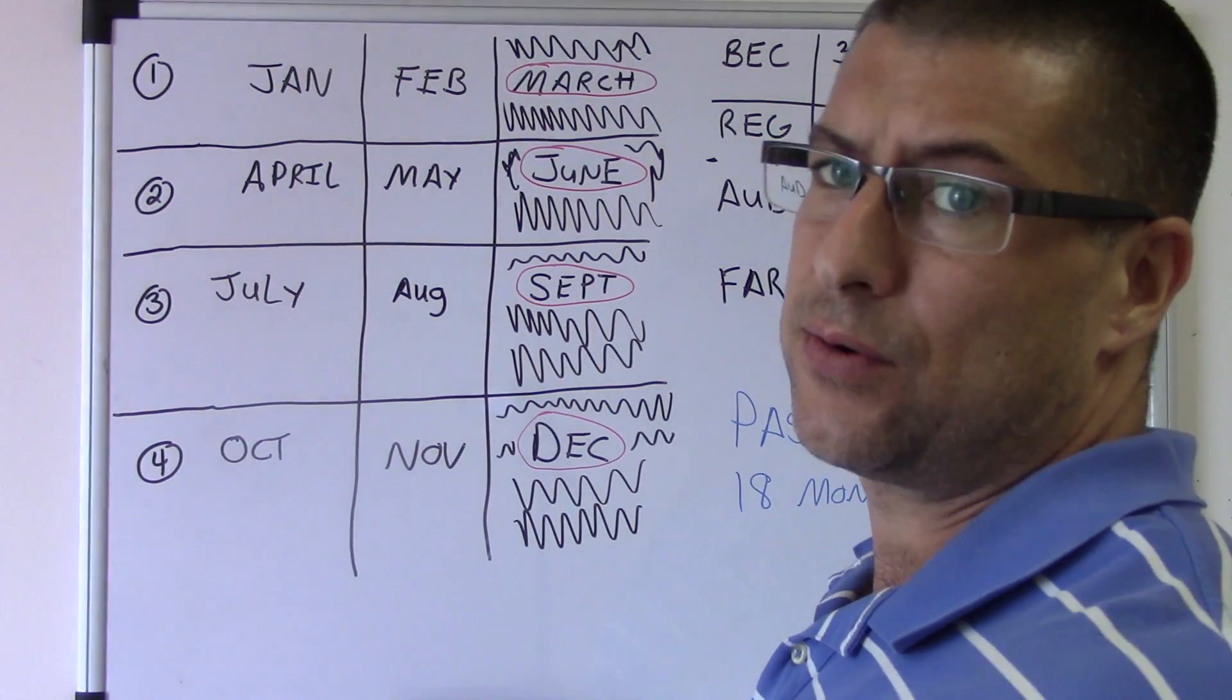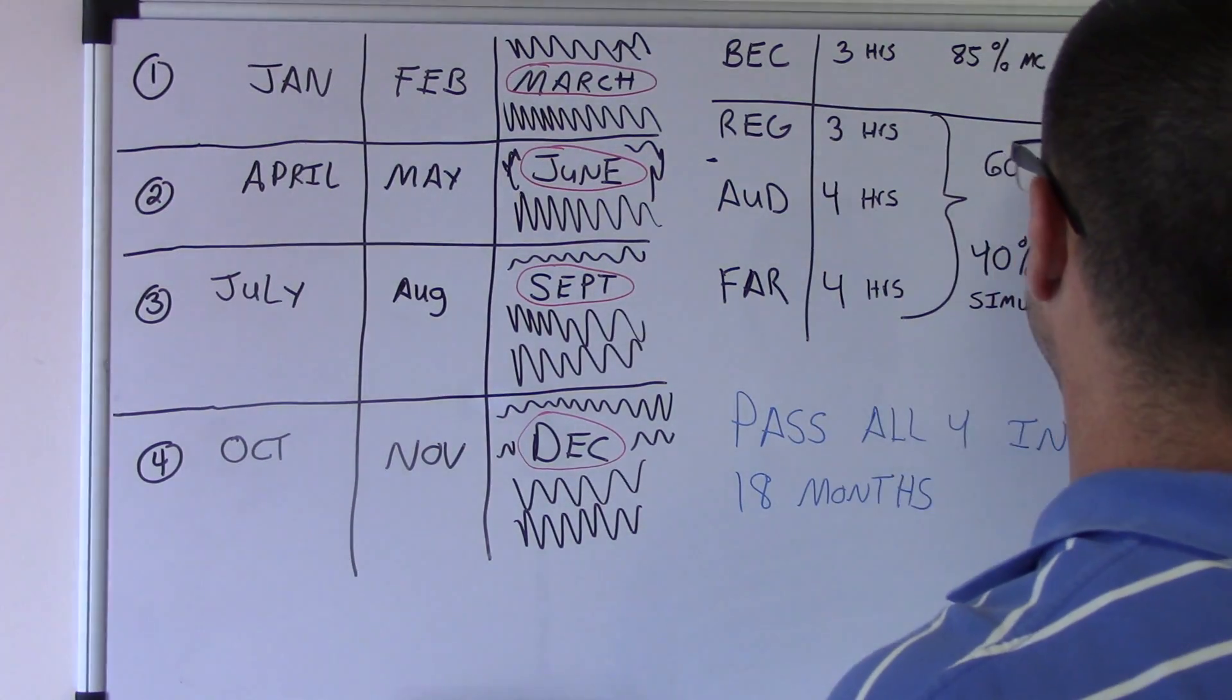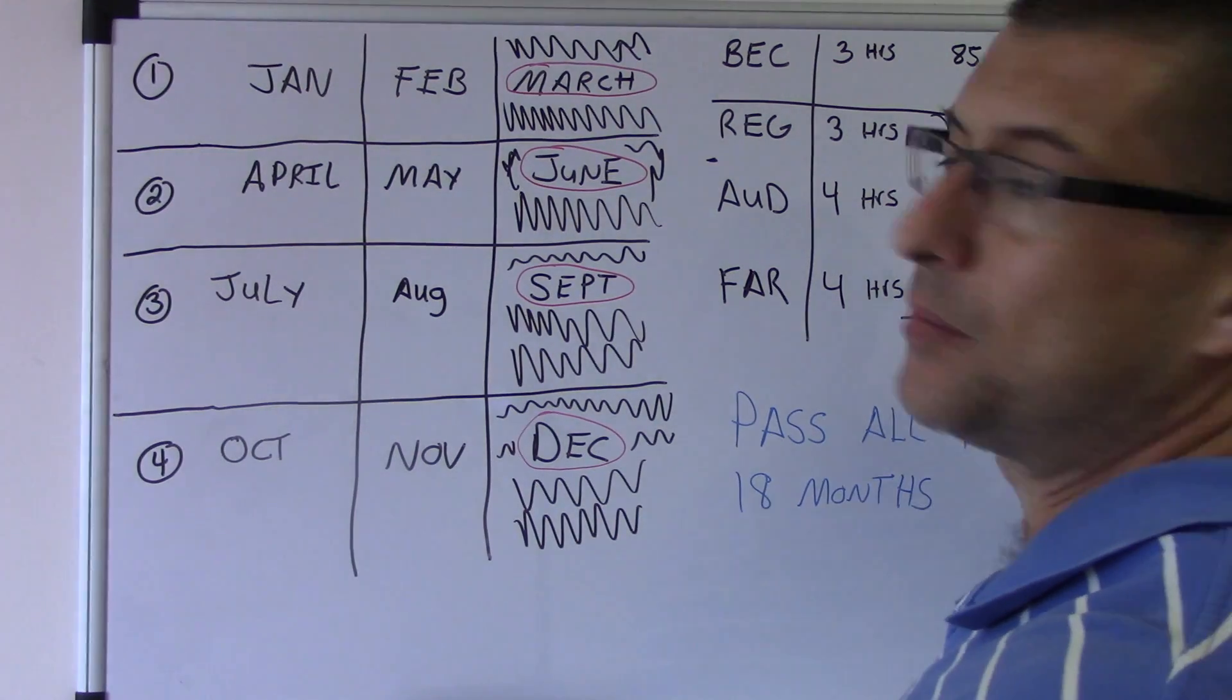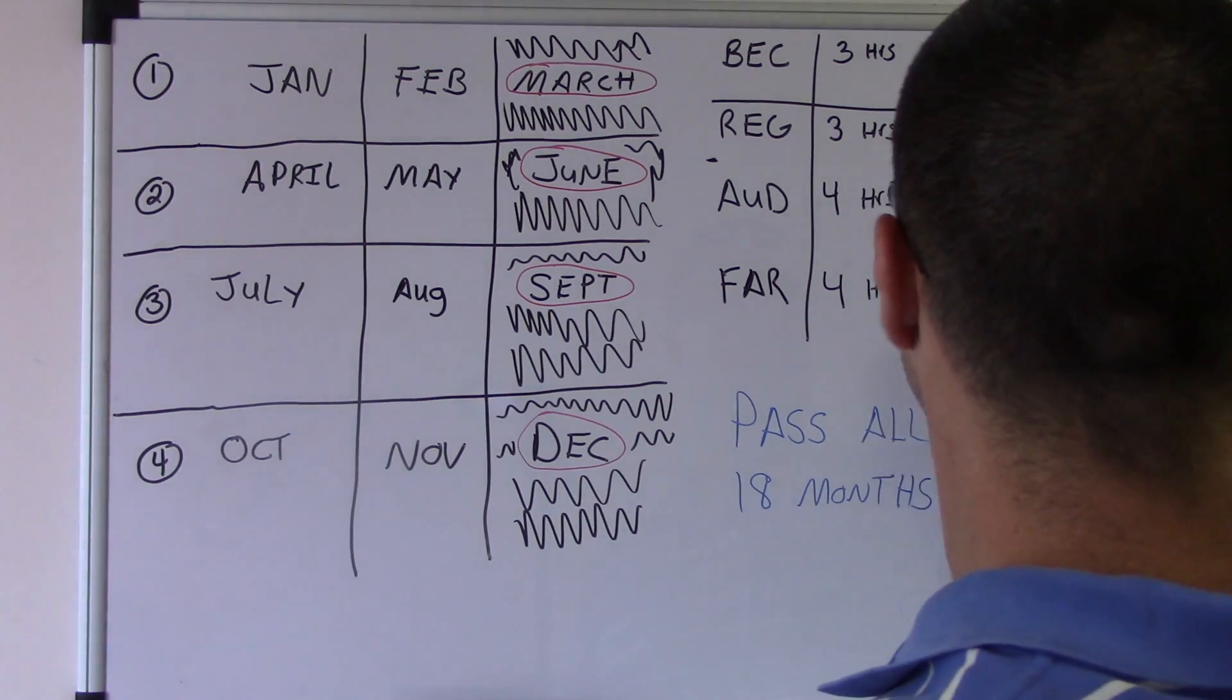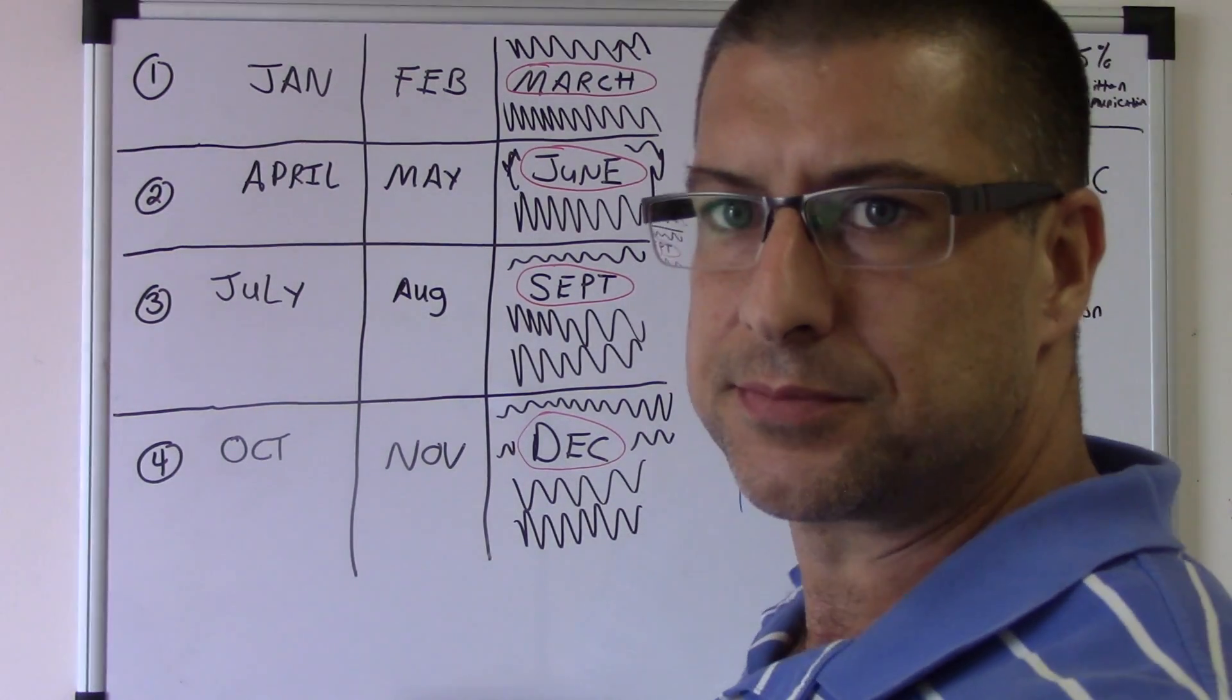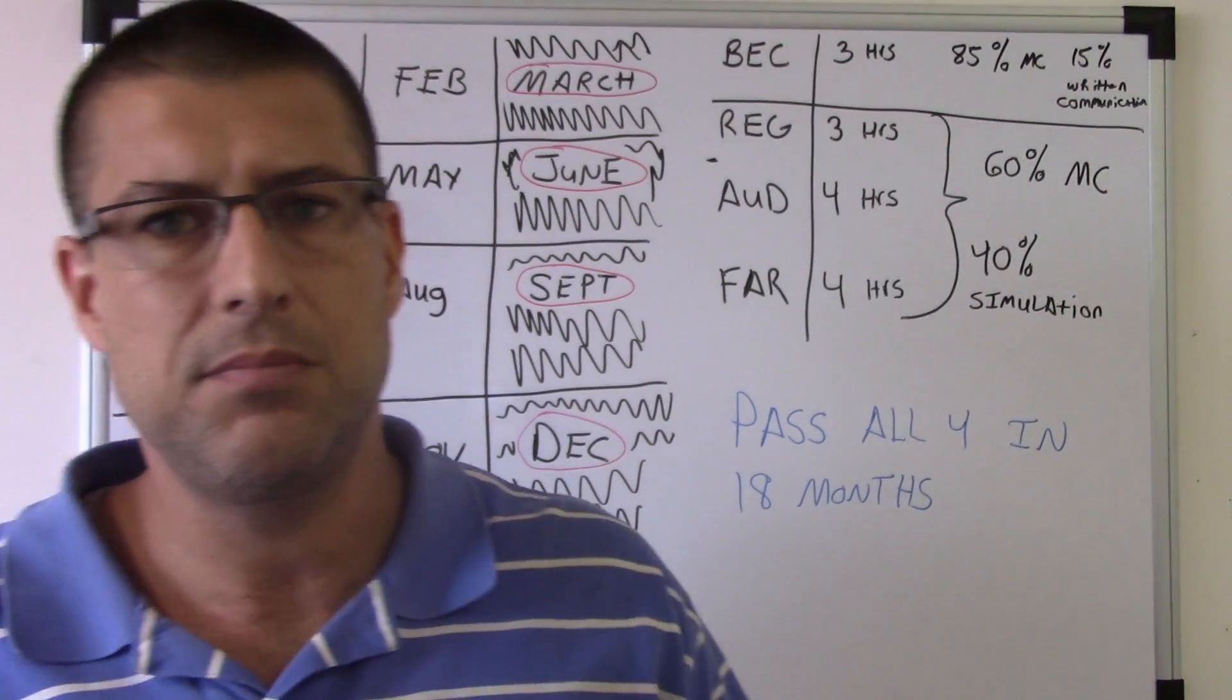And then I had to just go away from that and do the written communication with BEC. So I think if I could do it over, I would do BEC first, hopefully pass it, and then you don't have to worry about the written communication and everything left is simulations.